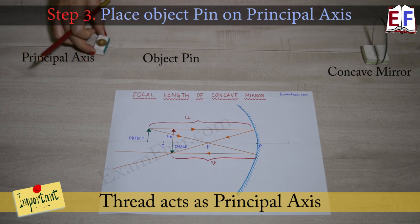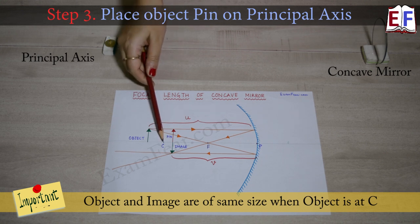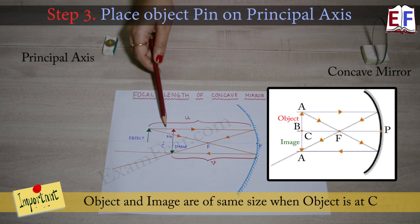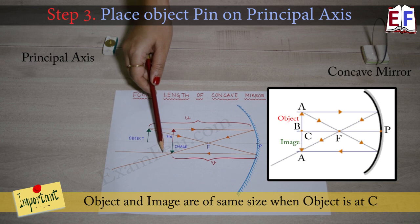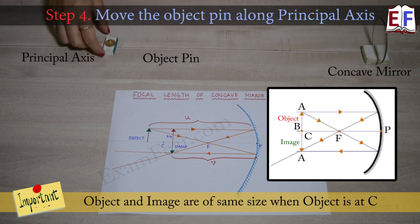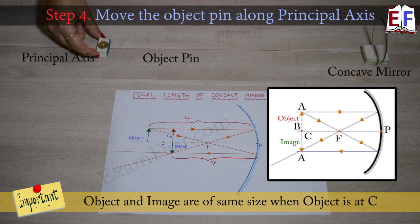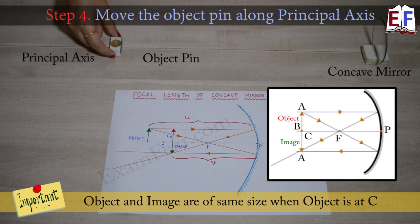Now, an important property: when an object is placed at the center of curvature of a concave mirror, the image is also formed at the center of curvature — it is real, inverted, and the same size as the object. So we will move the object along the principal axis to find the point where we get an inverted image of the same size as the object.